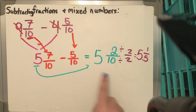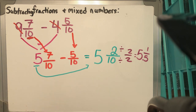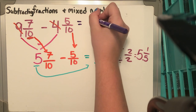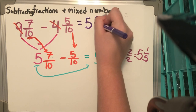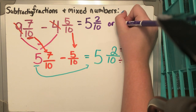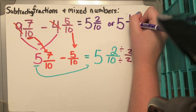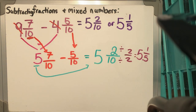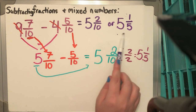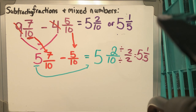2 divided by 2 is 1, and 10 divided by 2 is 5, so my answer can be either 5 and 2/10 or, simplified, 5 and 1/5. Either one will work — you just have to pay attention to what the question is asking for.